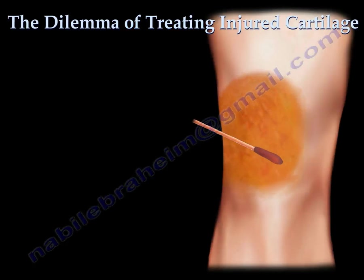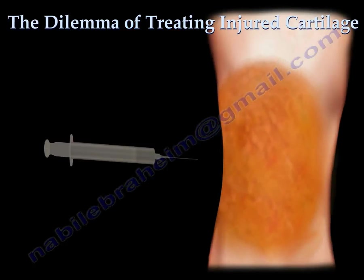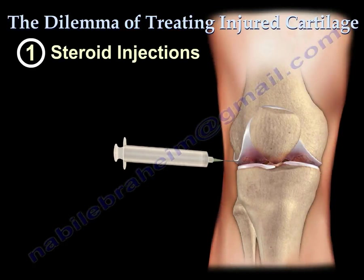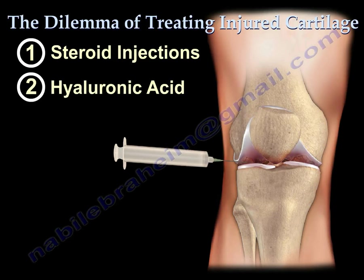Damaged cartilage can also be treated with a series of injections. Steroid injections such as cortisone are powerful anti-inflammatory drugs used in the treatment of osteoarthritis. Hyaluronic acid is a substance produced naturally in the body and is present within cartilage. When isolated, hyaluronic acid is a thick, viscous solution that can be added to the natural hyaluronic acid of the knee joint, using purified hyaluronic acid derived from either rooster combs or genetically engineered cells.